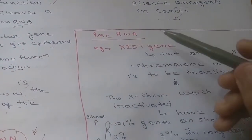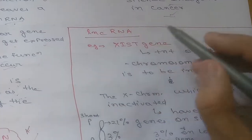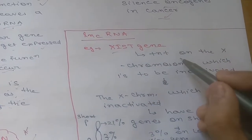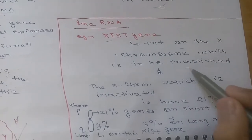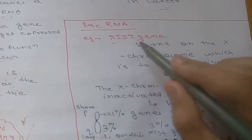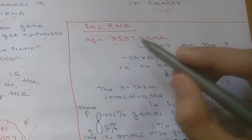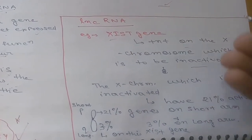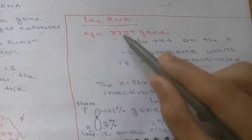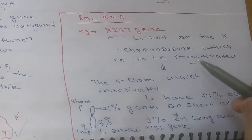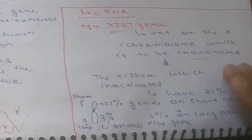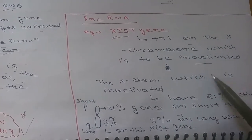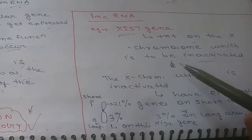Now coming to lncRNA, long non-coding RNA. We will discuss the XIST gene, which is generally present on the X chromosome that is to be inactivated. The XIST gene is responsible for inactivation of that chromosome, and it is present on whichever chromosome needs to be inactivated.